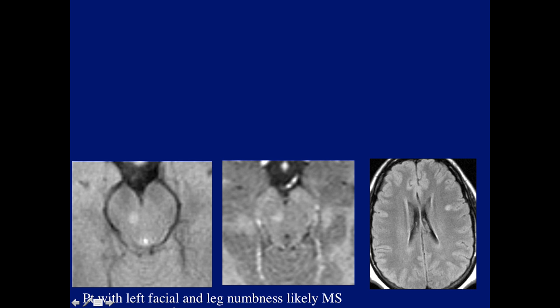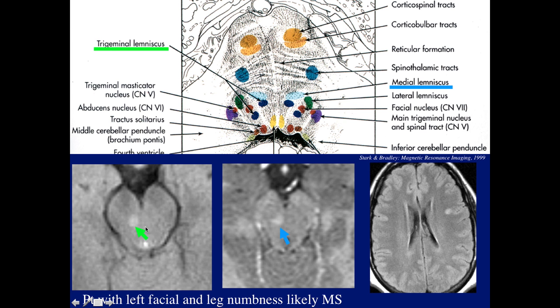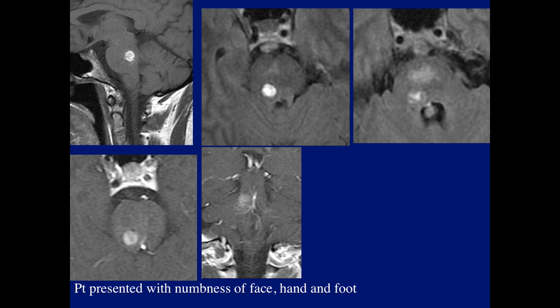Here's another patient with left facial pain and leg numbness, likely MS lesions. Notice the lesion here — it again encompasses both structures, the medial lemniscus and the trigeminal lemniscus, explaining why the patient has both lower extremity and facial symptoms. These two structures are very close together, next to each other.